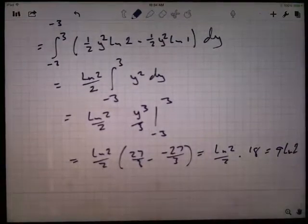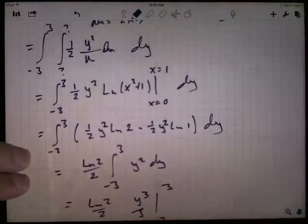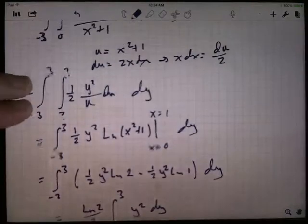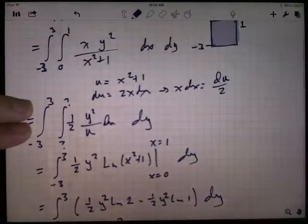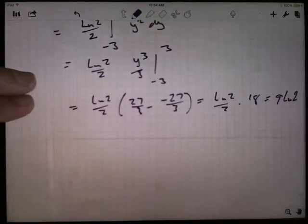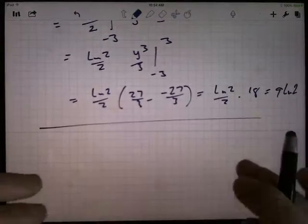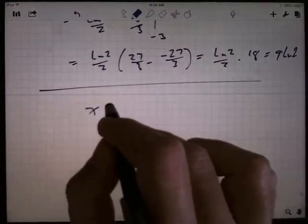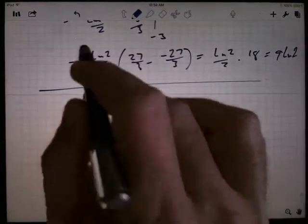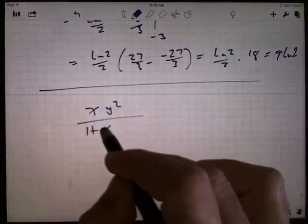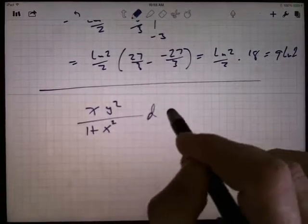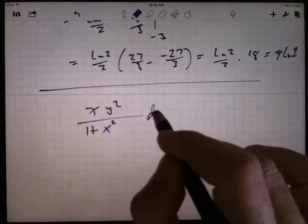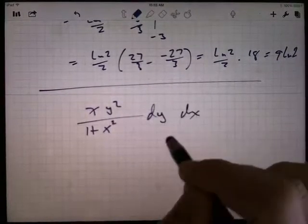Okay, so there you go. That's doing it with the X's first, and, you know, let's do it the other way too. I'm going to start all over again. Okay, I've got XY squared over 1 plus X squared, D, I'm going to do it DY DX this time.